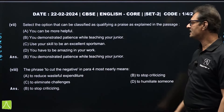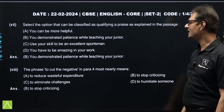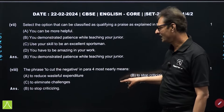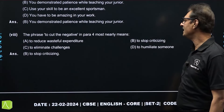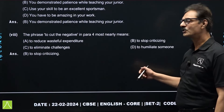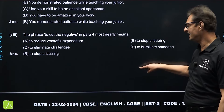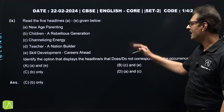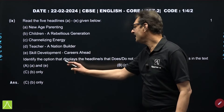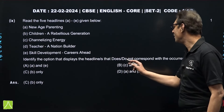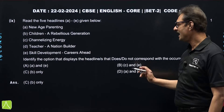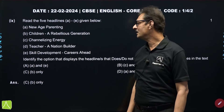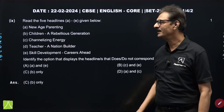The next question in this was MCQ based — from the options, select the correct one. The correct answer is option number B: 'you demonstrated patience with teaching your Julia.' The last question, number eight: the phrase 'to cut the negative' in paragraph 4 nearly means to stop criticizing, that is option number B — an easy one. One more MCQ: read the five headlines given below. This question was a bit tricky — identify the option that does not correspond with the occurrences in the text. The correct answer is option C, that is B only — 'children: a rebellious generation.' These were the answers for the first passage.